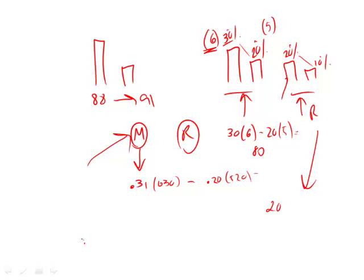And I'm keeping these the same: 6 for the first year, 88, and 5 for 91. So 20 times 6 minus 10 times 5, that ends up giving me 70. Look, it's lower, and you'll see that's always the case.